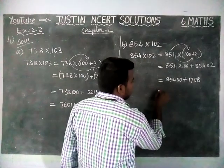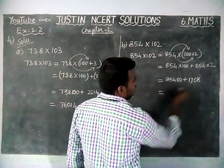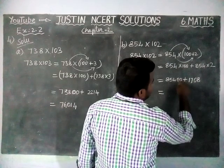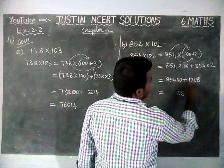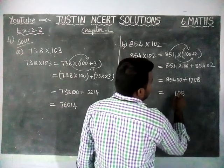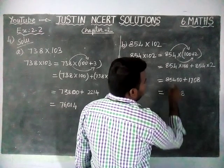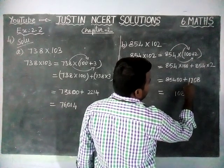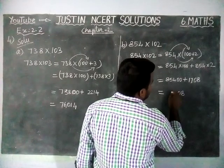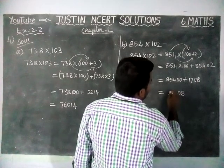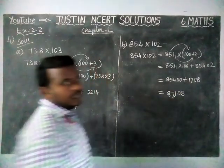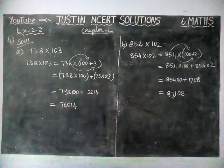So 854 into 2 is 1,708. Adding the results: ones place 8, tens place 0, hundreds place 4 plus 7 is 11 carry 1, thousands place 1 plus 1 plus 5 is 7, ten-thousands place 8. So 87,108 is the answer for option (b).